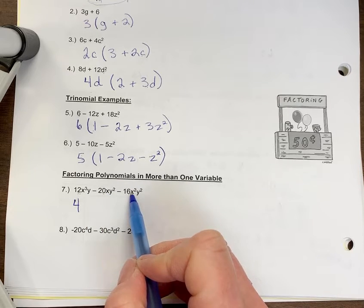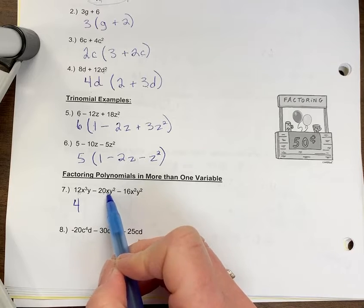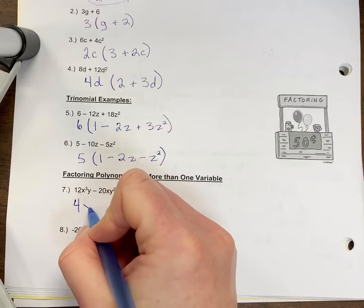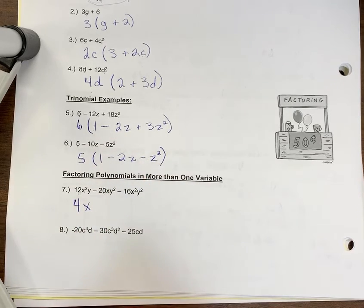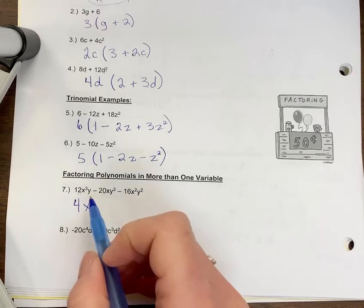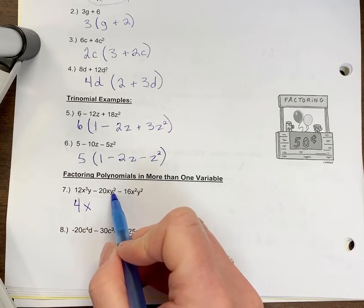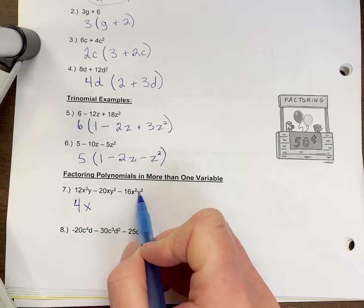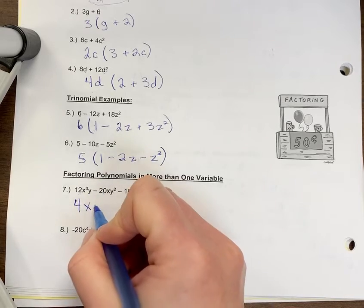Then I look at the y's. I have one y here, y squared means there's two, y squared there's two, but because there's only one here, that's the maximum I can factor out. Open up your brackets.